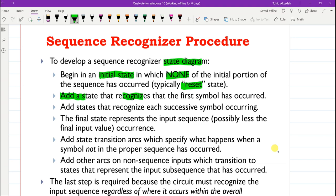Then we add another state which recognizes that the second symbol after the first one has occurred, and so on. At the end, we will have a final state which represents the input sequence has occurred completely.